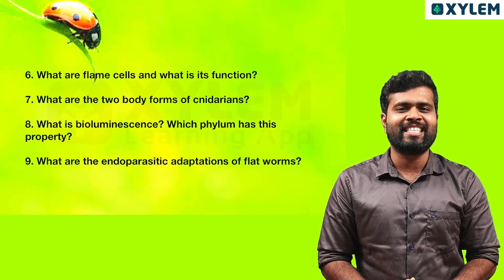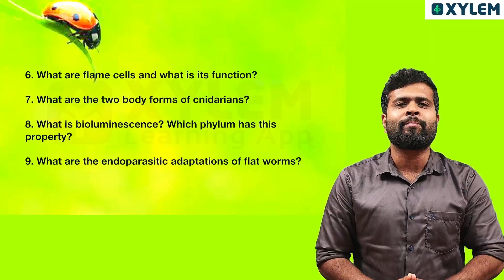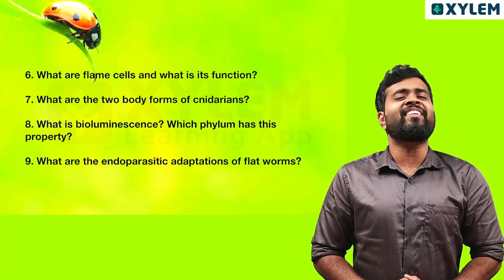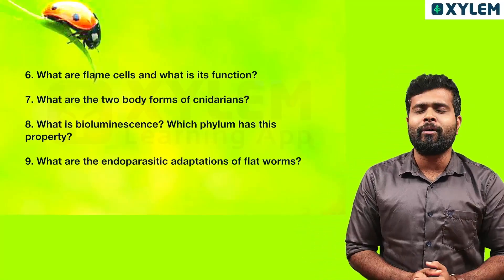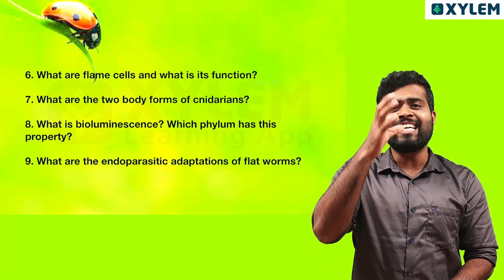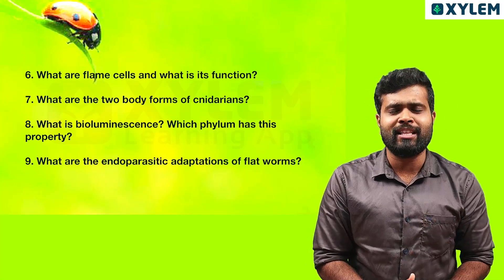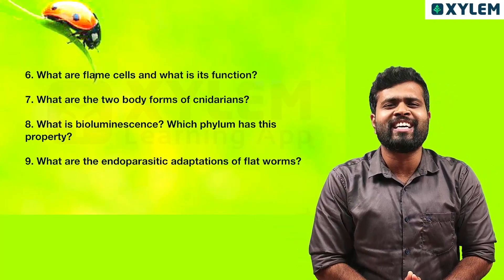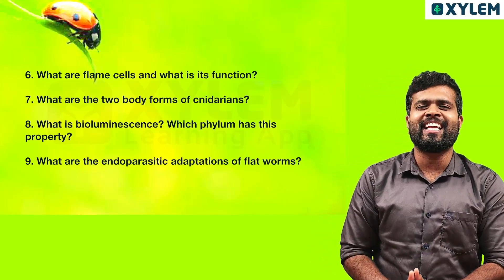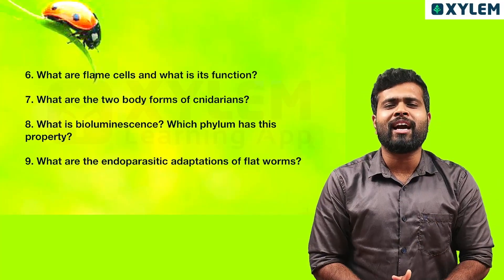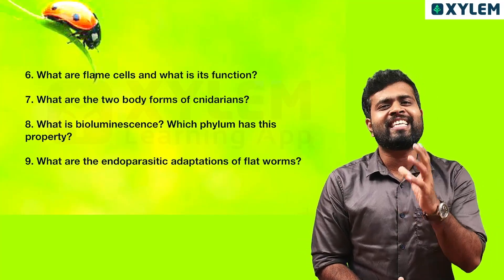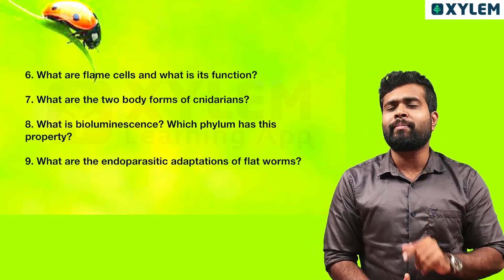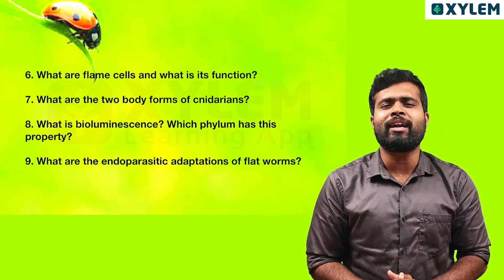Next question: what are the two body forms of Cnidarians? Cnidarians — we call it Coelenterate. The two body forms are Polyp form and Medusa. Polyp form examples are Hydra and Sea Anemone. Medusa is the same as umbrella shape, and an example is jellyfish. So these are the two body forms: Polyp form and Medusa.